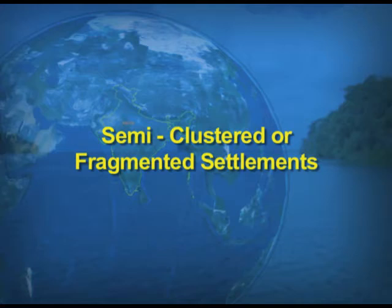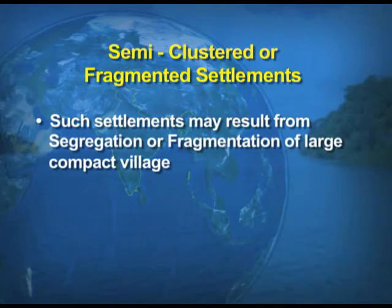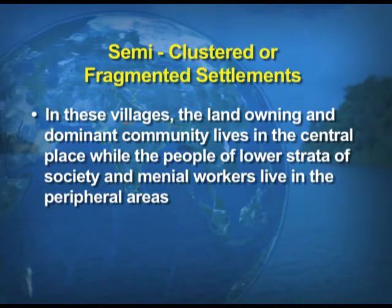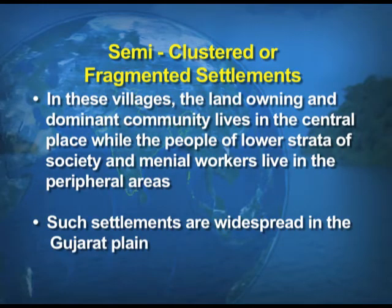Number two: semi-clustered or fragmented settlements are just opposite to the compact type. Such settlements may result from segregation or fragmentation of a large compact village, where a section of village society chooses or is forced to live a little away from the main cluster. The landowning and dominant community lives in the central place while lower-caste people live in peripheral areas. Such examples are very common in the plains of Gujarat.